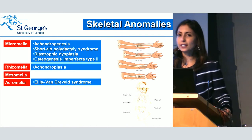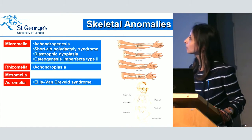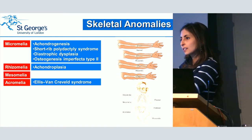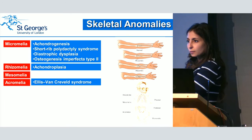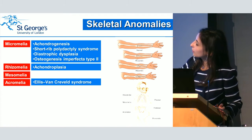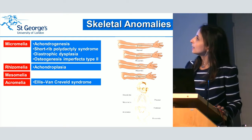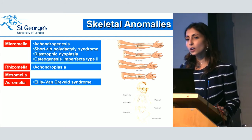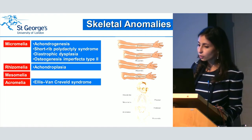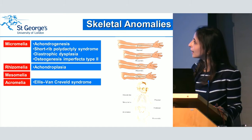There is certain terminology we really need to be familiar with. Micromelia means the whole limb is short. Rhizomelia — rhizo means proximal — means the proximal long bones are affected. Mesomelia means the middle bones are affected. And acromelia is the distal. The reason these are important is that the pattern of abnormalities can give you a clue to which condition is present. For example, micromelia can be seen in achondrogenesis, short-rib polydactyly, diastrophic dysplasia, and osteogenesis imperfecta. Rhizomelia is characteristic of achondroplasia.